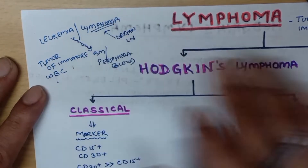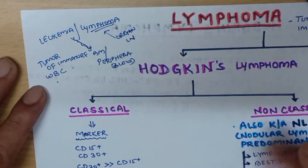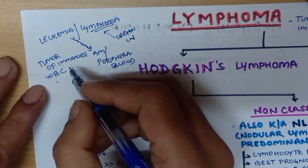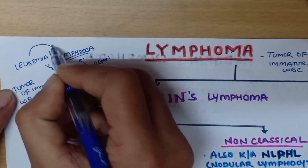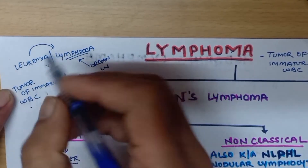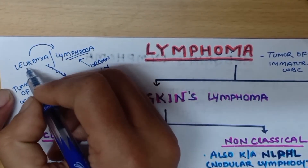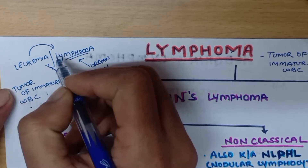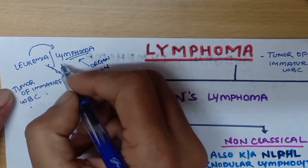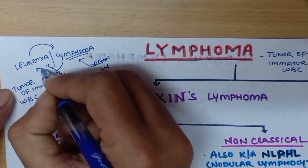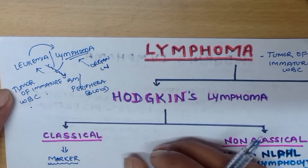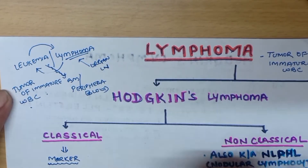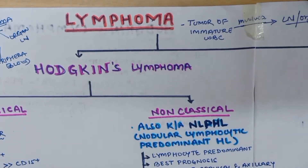Every leukemia can have a lymphoma form and vice versa — every lymphoma form can go into leukemia.